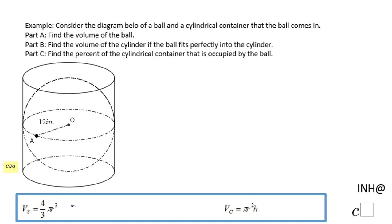The ball is a sphere, so I'm going to use this formula which says 4 over 3 π r cubed. If we know the radius then we can find the volume, and the radius is 12 inches.